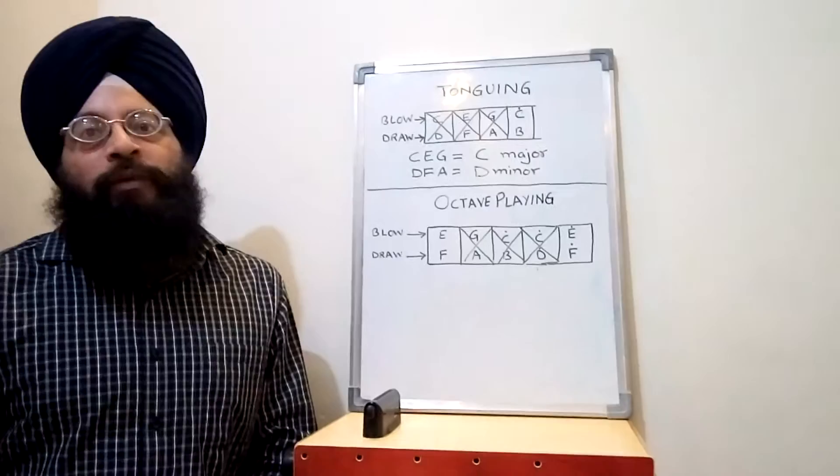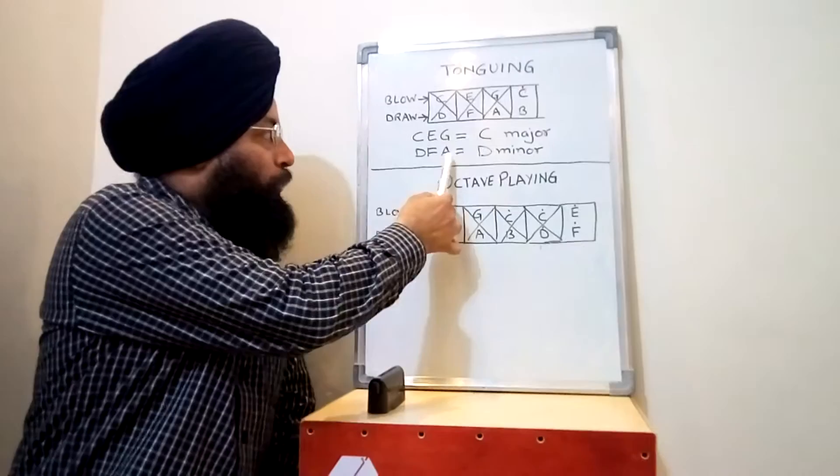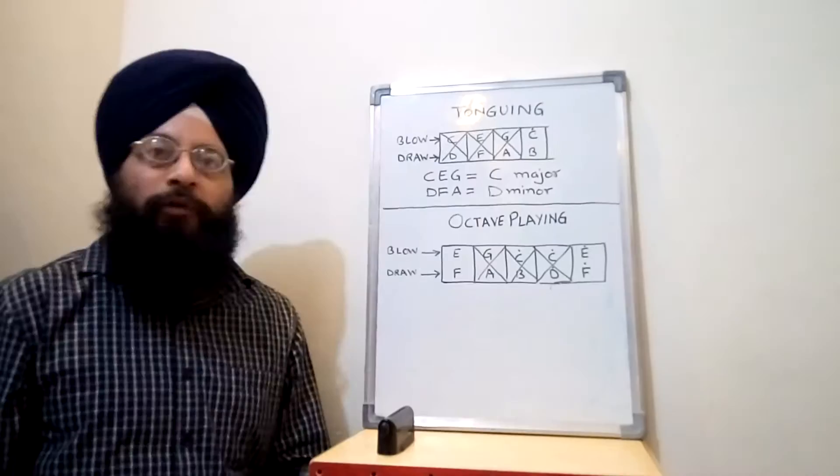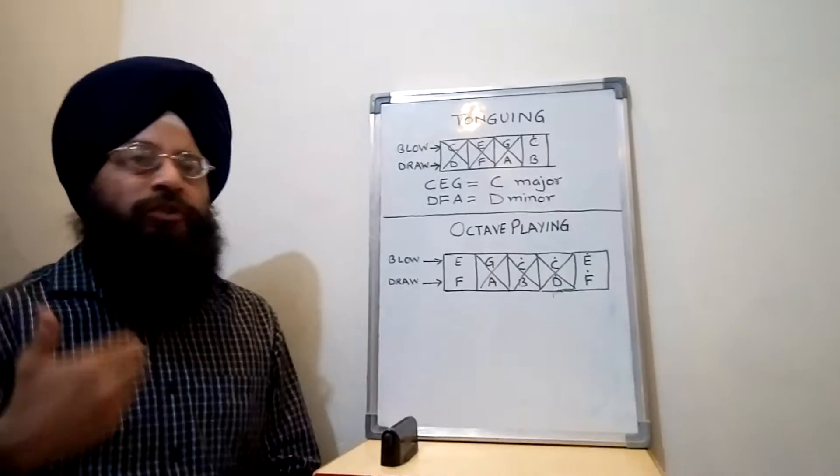Now if you see the draw and blow pattern, during the blow notes, if you play blow notes then you will obtain C major chord in normal C scale harmonica. And the same way, if you draw three or four notes simultaneously, you will get the D minor chord.